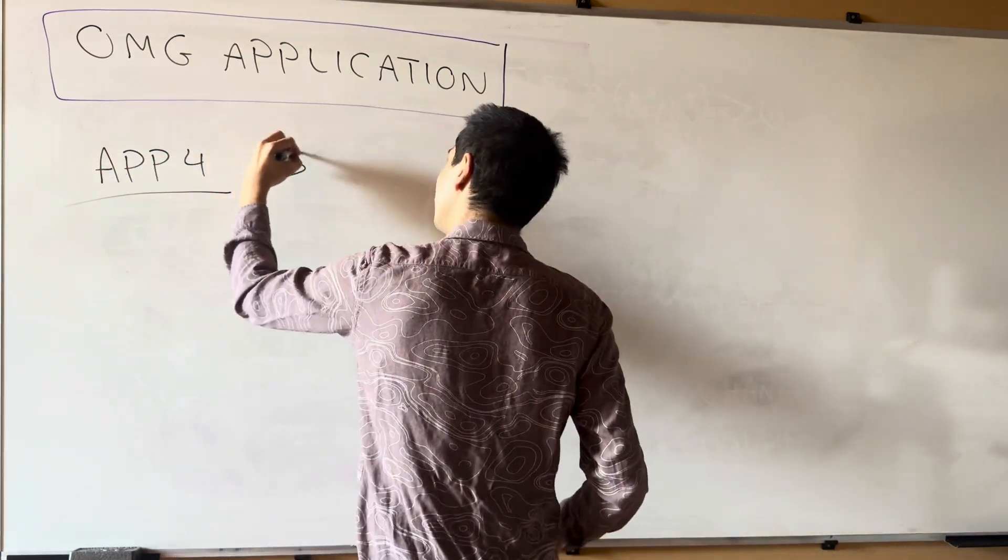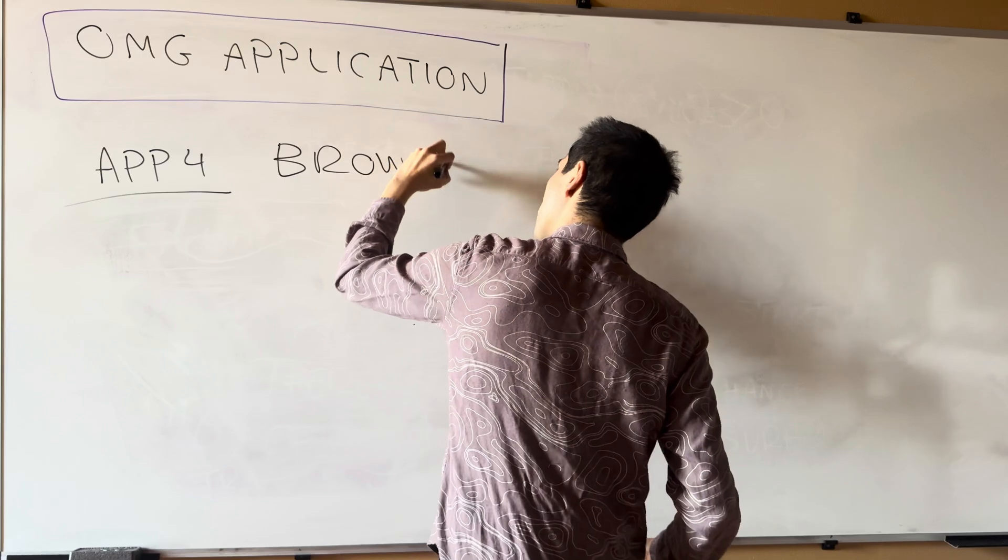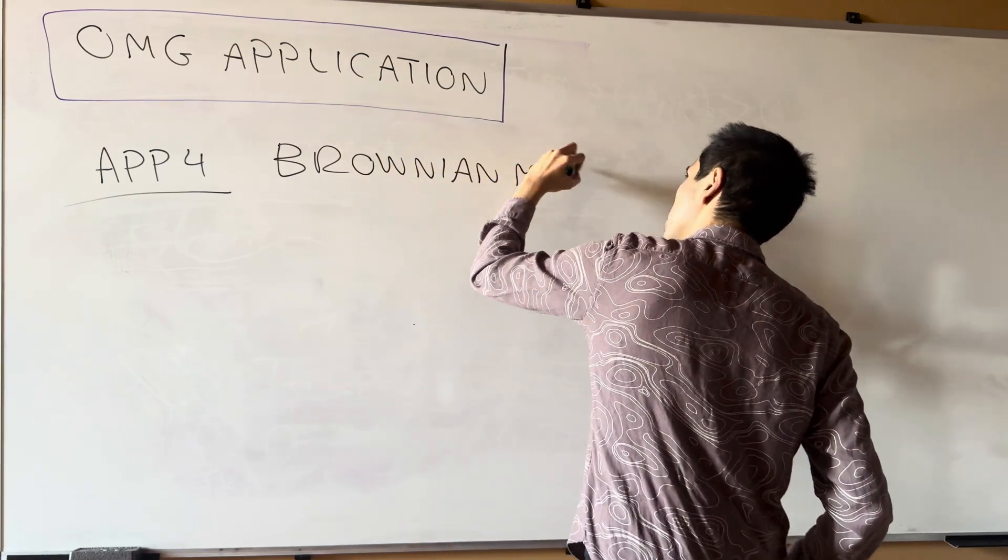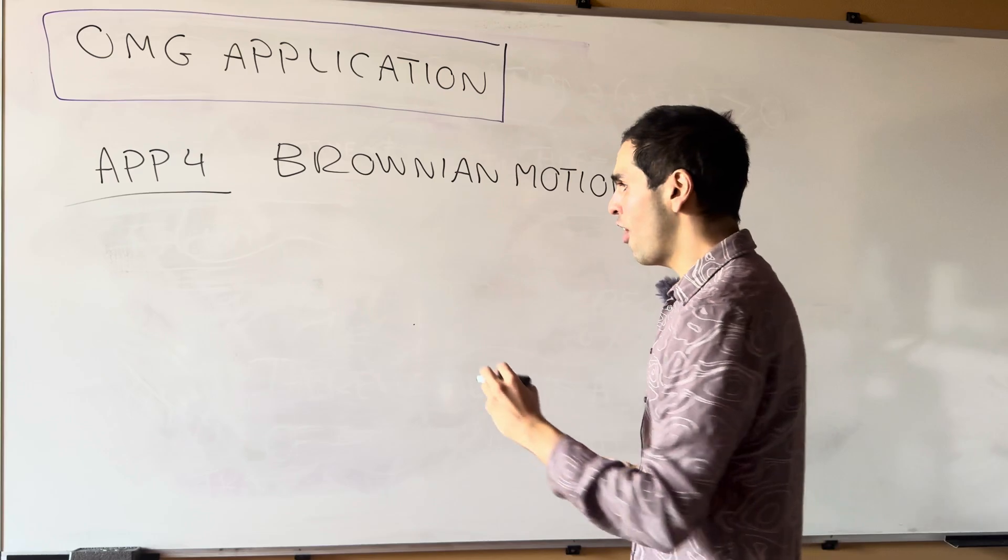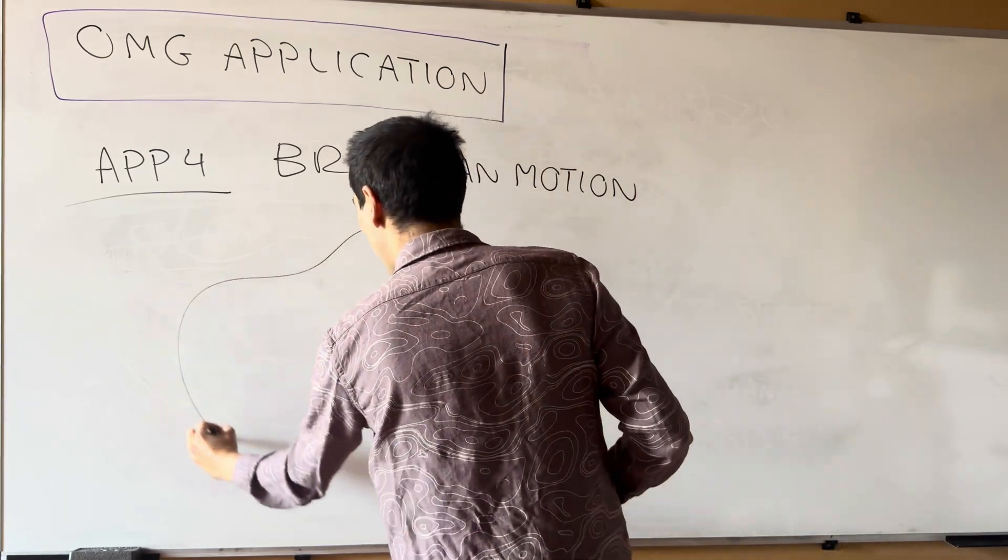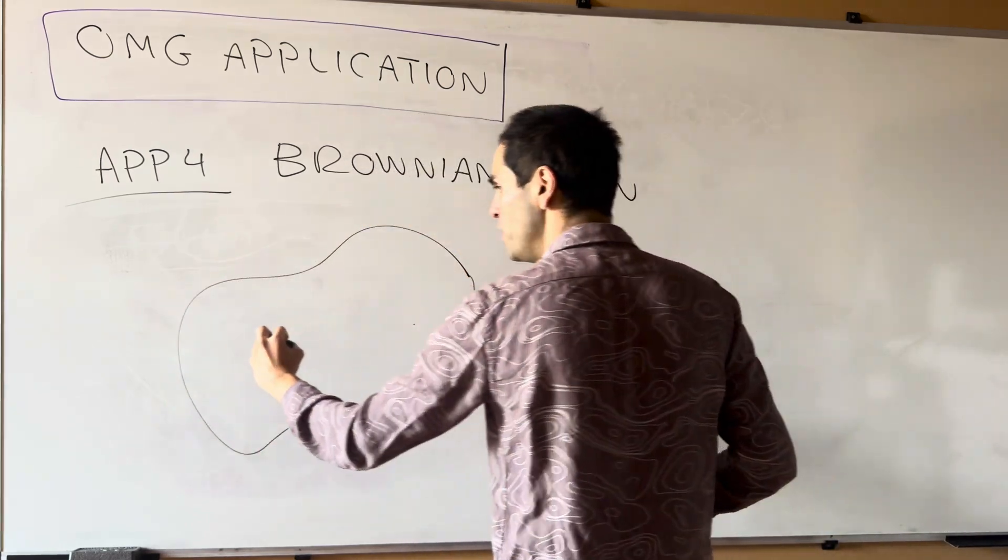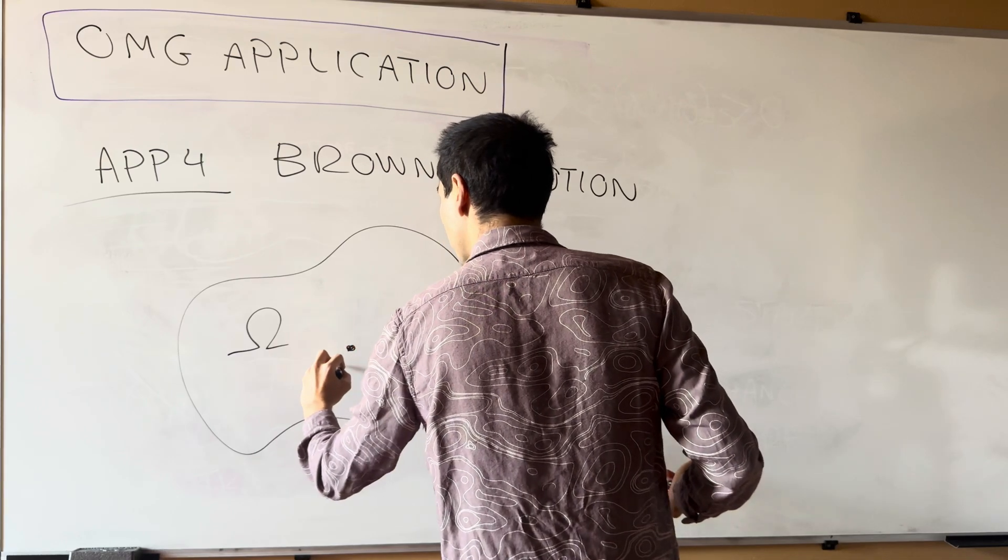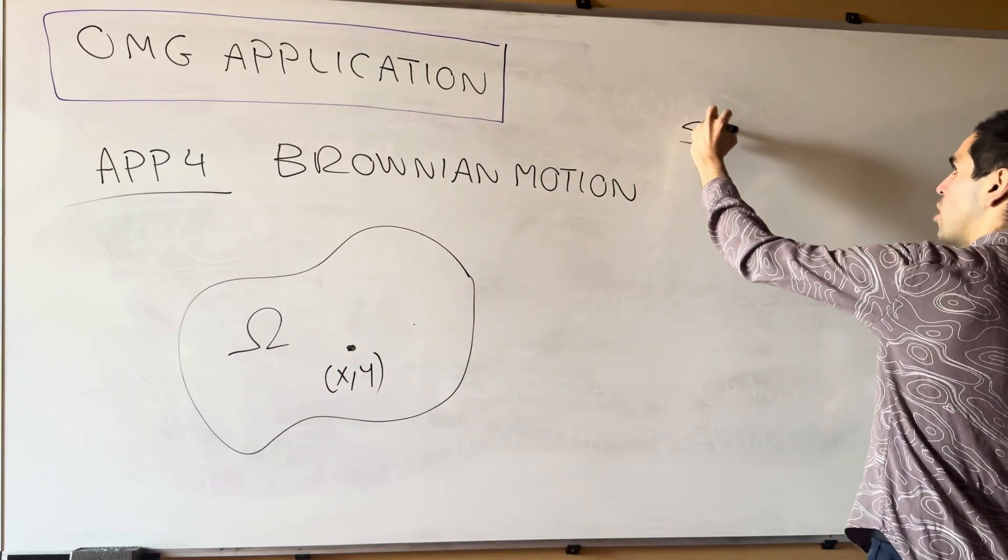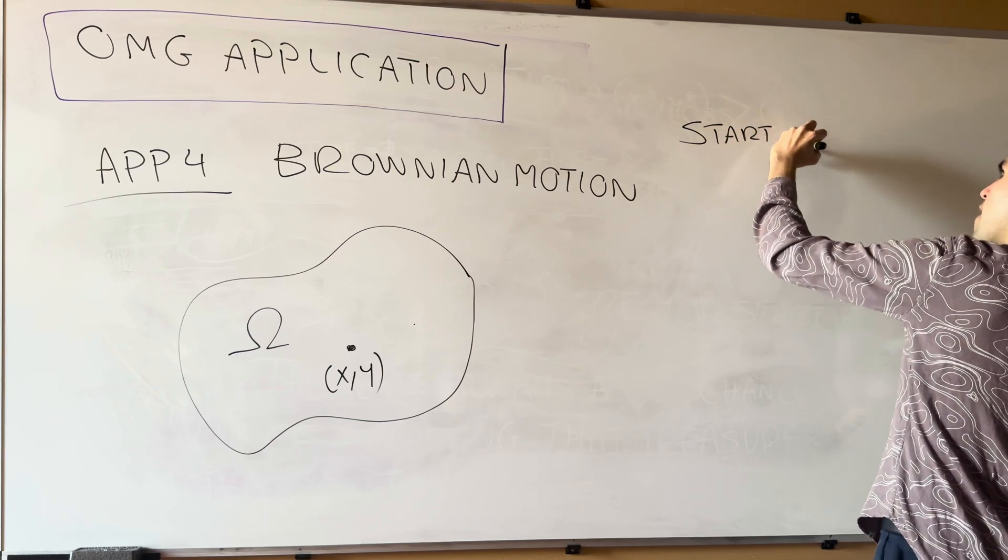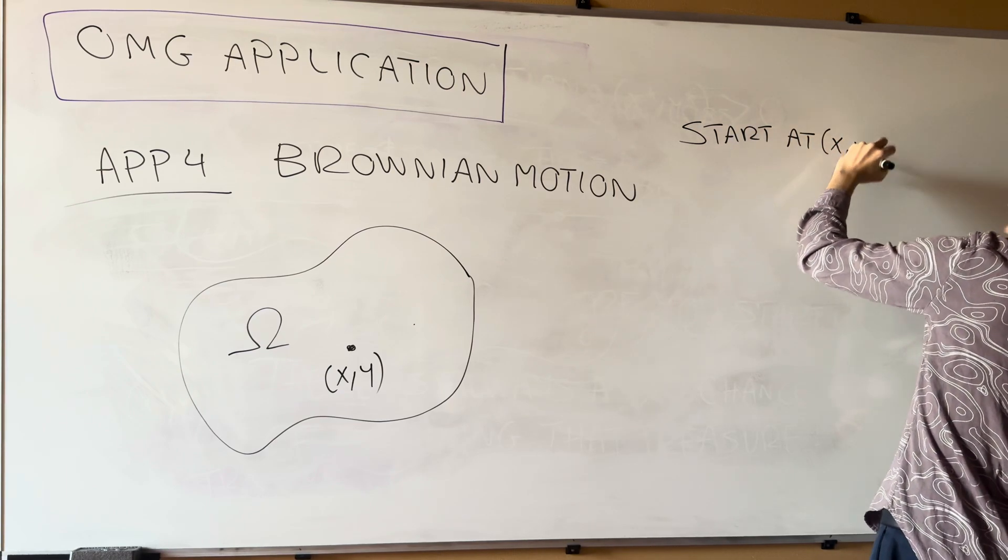So fourth application, Brownian motion. And in particular, consider the following scenario. So suppose you're in some region omega and you start at the point x comma y.